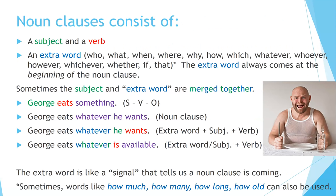Noun clauses consist of a subject, a verb, and an extra word. The extra word can be: who, what, when, where, why, how, which, whatever, whoever, however, whichever, whether, if, or that. The extra word always comes at the beginning of the noun clause.